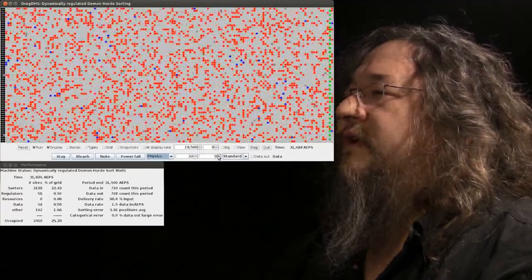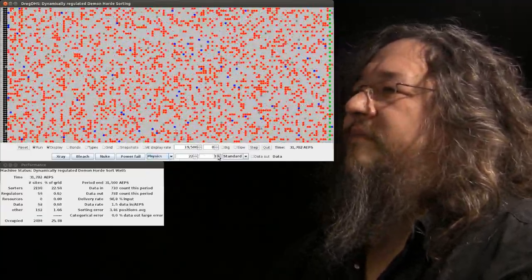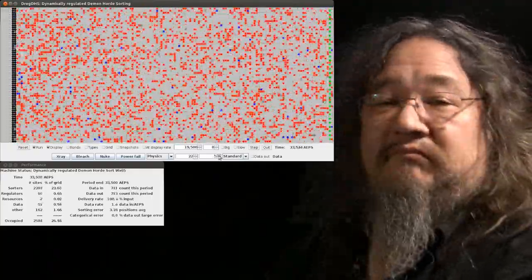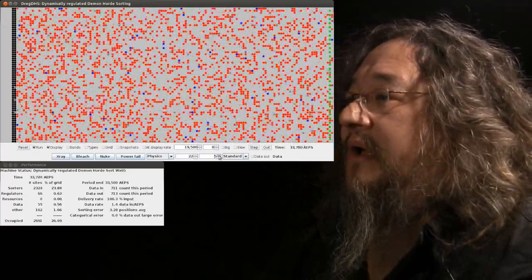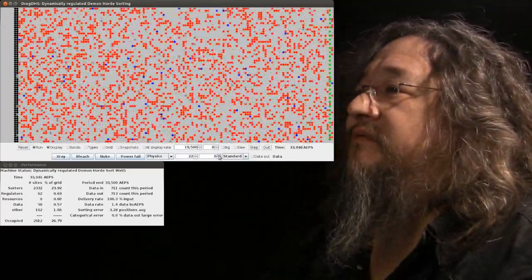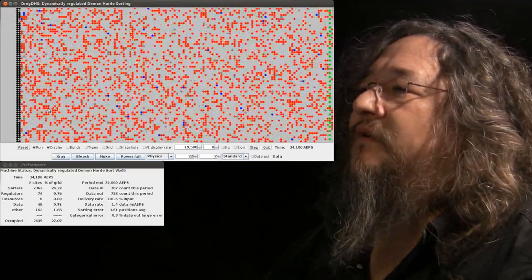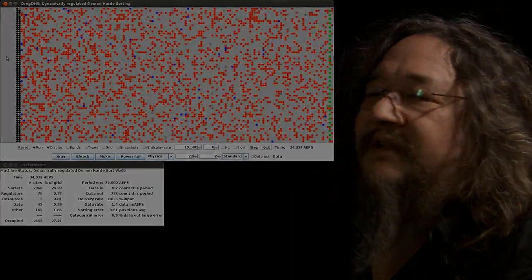If we want, we can start stealing resources from this sorting thing. The machine adjusts. Eventually its sorting performance starts to degrade. But now we've got all of this space over here. There are still events happening here.